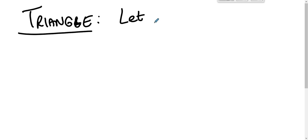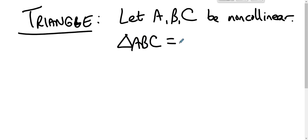Gotta do one other definition before we do the big theorem. We gotta talk about what we mean by a triangle. So we're going to let A, B, and C be non-collinear. We're going to define triangle ABC to be the union of segment AB, segment AC, and segment BC.